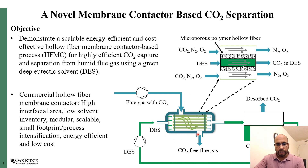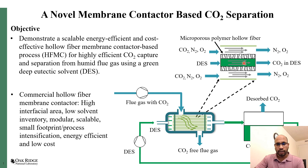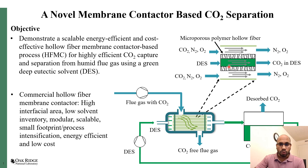The membrane contactor we are using is porous, so through the pores the gas can come through, but the deep eutectic solvent flows through the lumen side — inside of the fiber. Here, in a blowout of a single fiber, we see that through the lumen side the deep eutectic solvent passes, while from the shell side the flue gas enters, and the deep eutectic solvent selectively absorbs CO2.